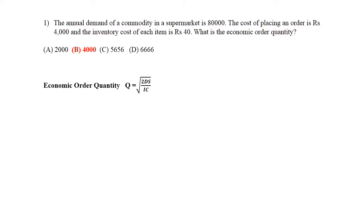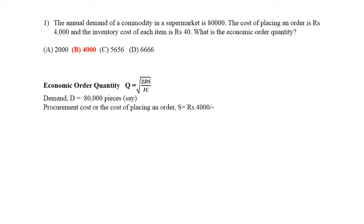Coming back to the formula: the annual demand of the commodity is 80,000 — consider it as 80,000 pieces. The cost of placing an order is the procurement cost, which is what we generally use. It may contain various things like paperwork and transportation involved. The procurement cost as given in the question is rupees 4,000 — the only quantity here given in rupees.